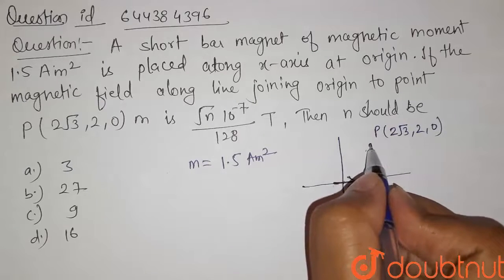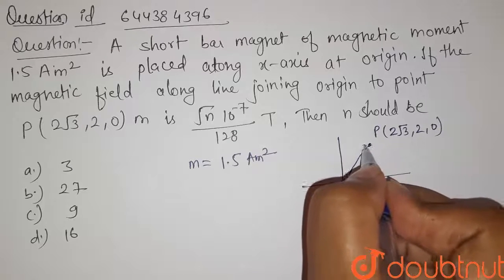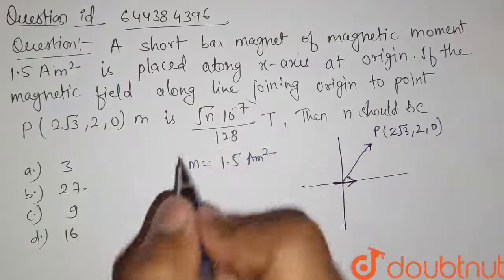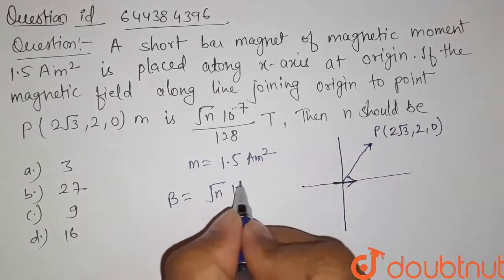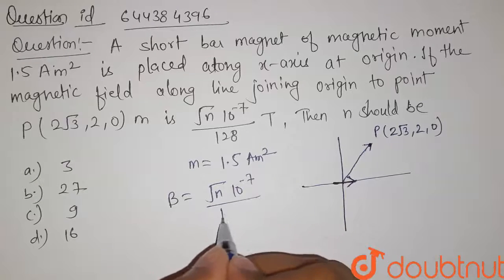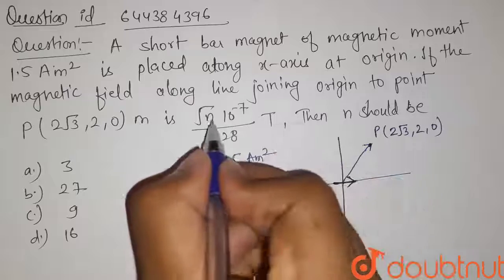So the magnetic field at this point along the line joining these two points is given equals to this. So here magnetic field is given √n × 10⁻⁷ divided by 128. So we have to find the value of this n.